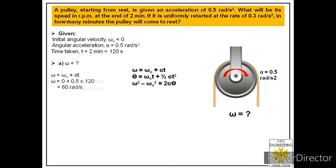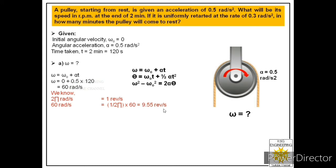The question asks for the answer in revolutions per minute. We know that 2π radian per second equals 1 revolution per second, so 60 radian per second divided by 2π gives 9.55 revolutions per second. Multiplying by 60, we get 573 revolutions per minute.